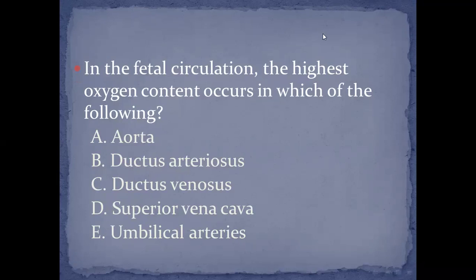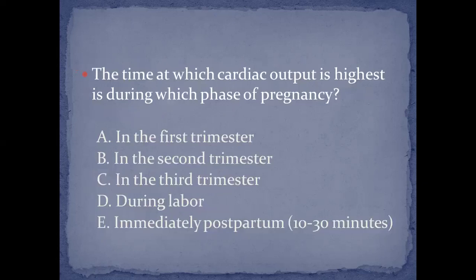Second question: in the fetal circulation, the highest oxygen content occurs in which of the following? Is it the fetal aorta, ductus arteriosus, ductus venosus, superior vena cava, or umbilical artery? The oxygenated blood enters the fetus from the placenta through the umbilical vein, not the umbilical artery. The first branch of richly oxygenated blood is in the ductus venosus, so the highest oxygen content is in the ductus venosus.